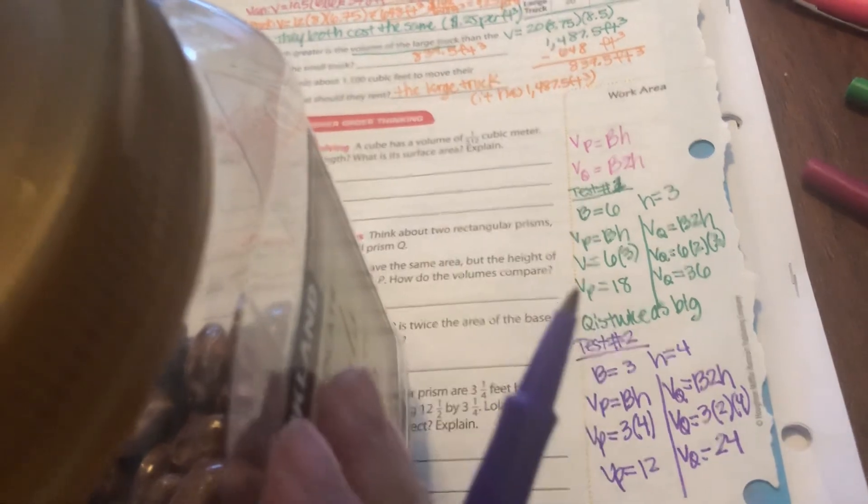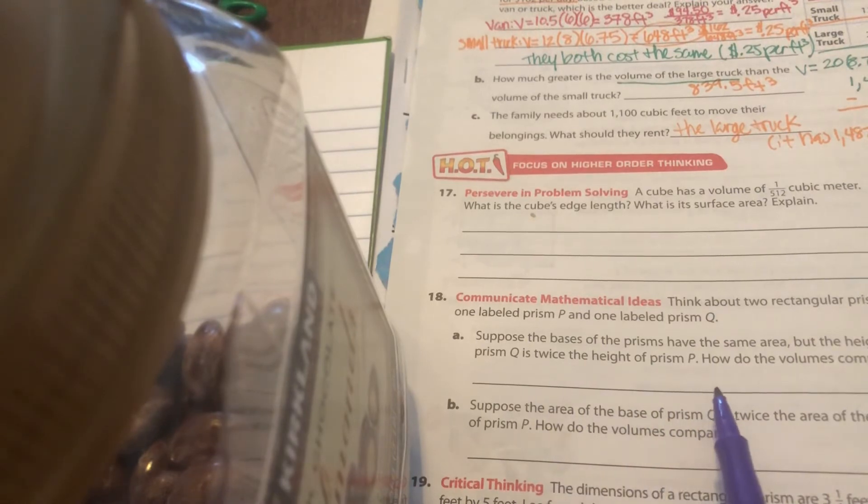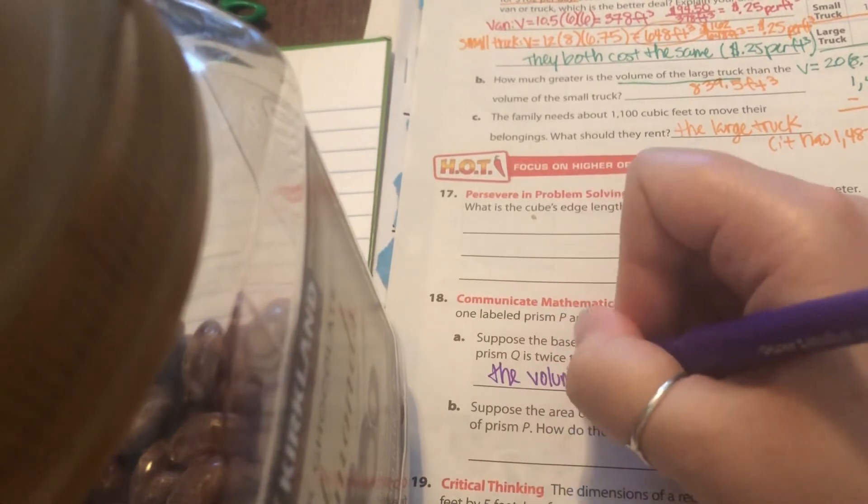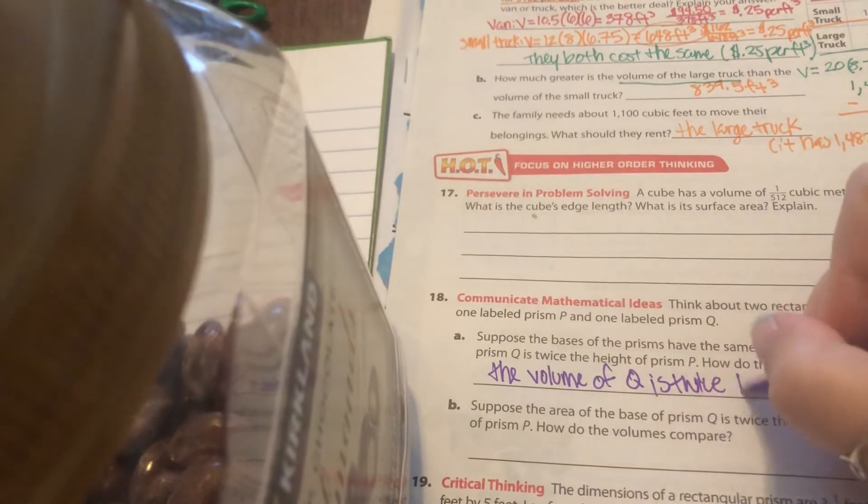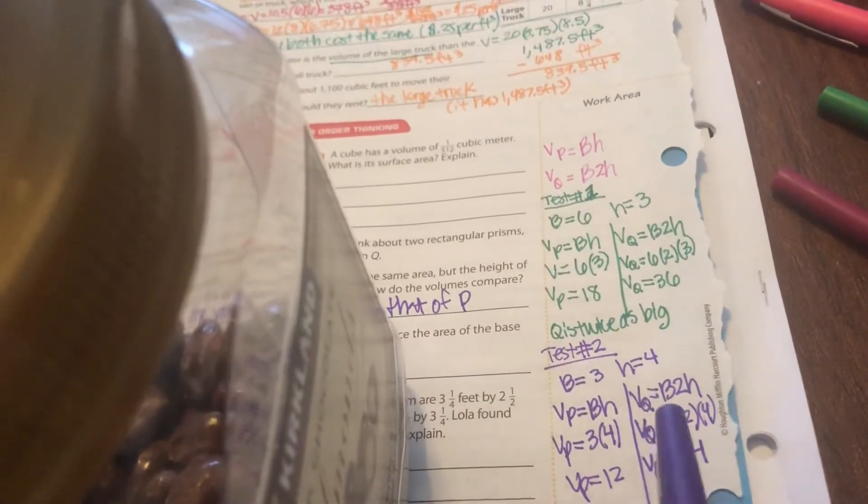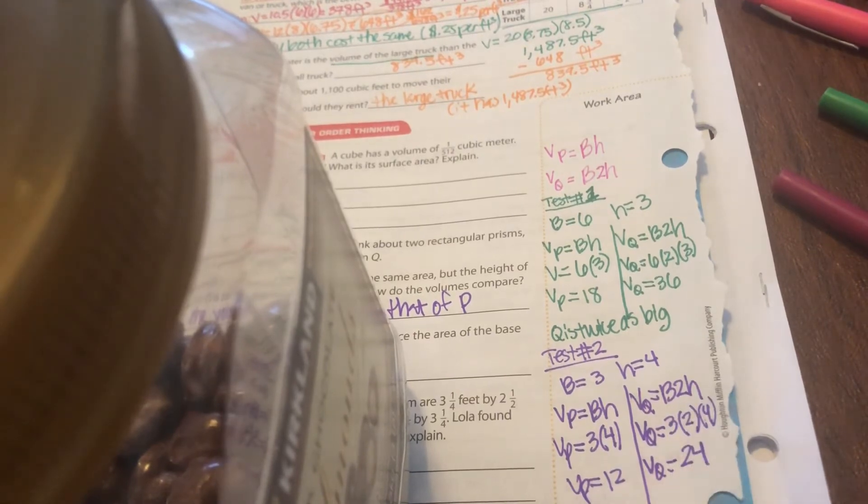So for my answer right here for part A, I would say suppose the bases of the prism have the same area, but the height of Q is twice the height of prism P. How do the volumes compare? The volume of Q is twice that of prism P. Now technically, you could have just seen that – well, I'm going to end up multiplying the same numbers, B and H, B and H, but this one I'm multiplying by 2. So of course it's going to be twice as big. Some of you guys didn't even have to test it, and you could have just seen it. But as we get more and more complicated, testing things out is a good tool.